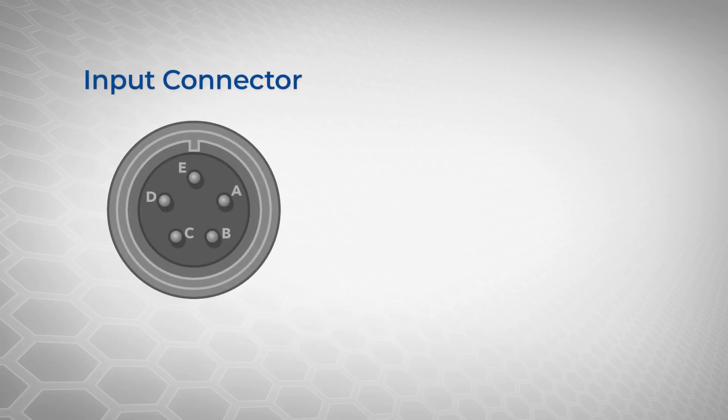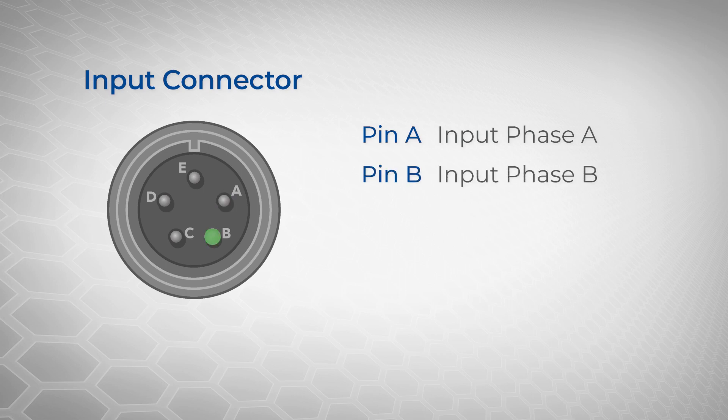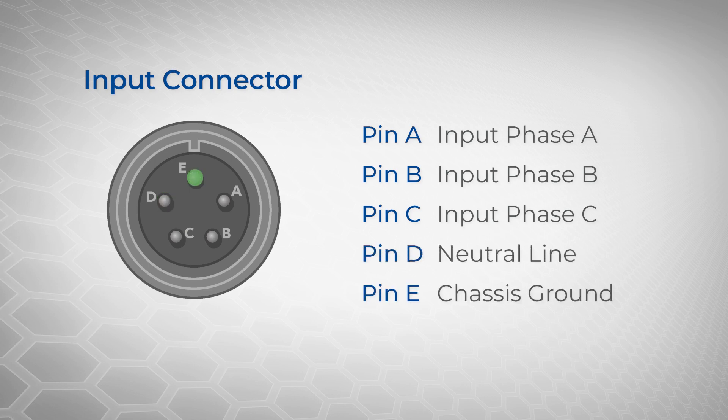On the top input connector, pin A is your input phase A, pin B is your input phase B, pin C is your input phase C, D is your neutral line, and pin E is the chassis ground.